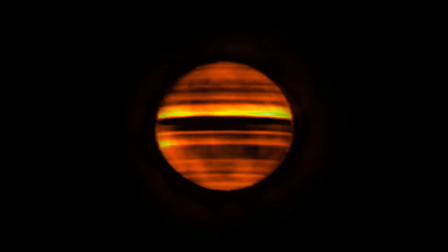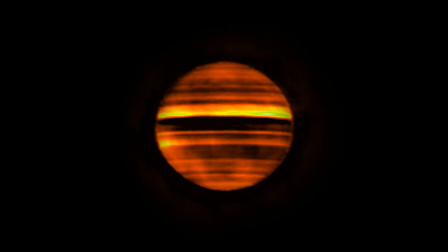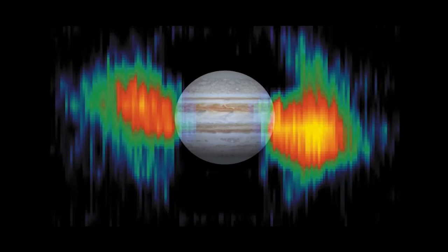When we look at a planet like Jupiter, depending on the wavelength, we can see deep into its atmosphere or observe the high energy processes happening in its magnetosphere. By comparing radio images with optical images, we can get a much clearer understanding of the physics involved.